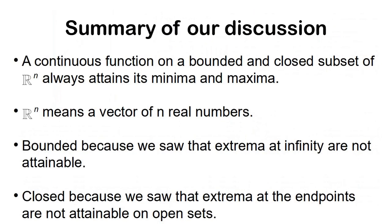So the summary of our discussion regarding whether the minima exists is that a continuous function on a bounded and closed subset of R raised to n always attains its minima and maxima. R raised to n signifies a vector of n real numbers, so the function might have multiple inputs. Bounded because we saw that extrema at infinity such as 1 over root x are not really attainable—you can keep going forward but you'd never reach a minima. Closed because we saw that the extrema at the endpoints are not attainable in open sets, and that's why it needs to be closed if we are to say for sure that it must have a minima.